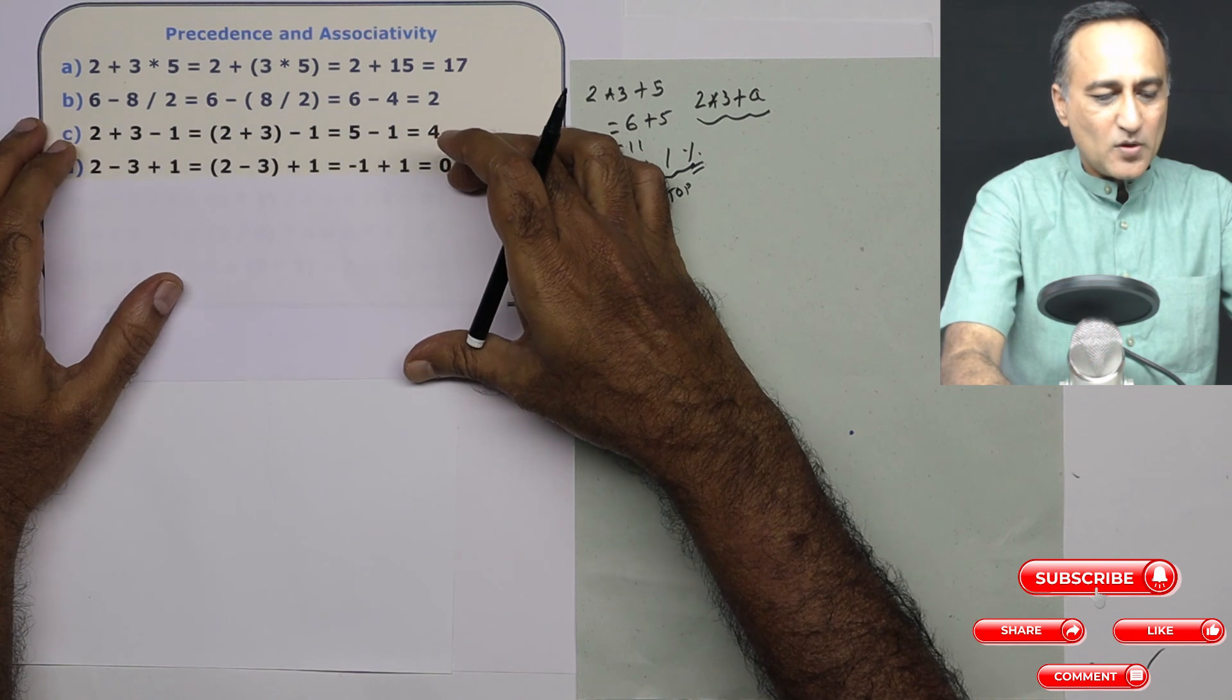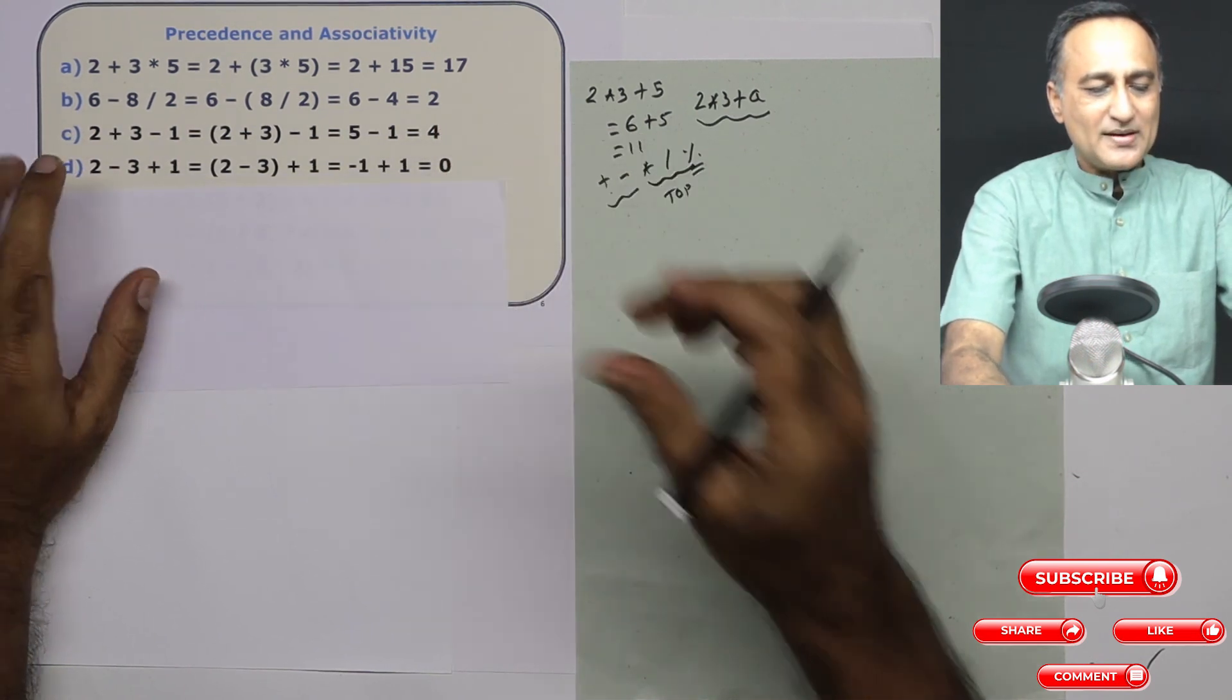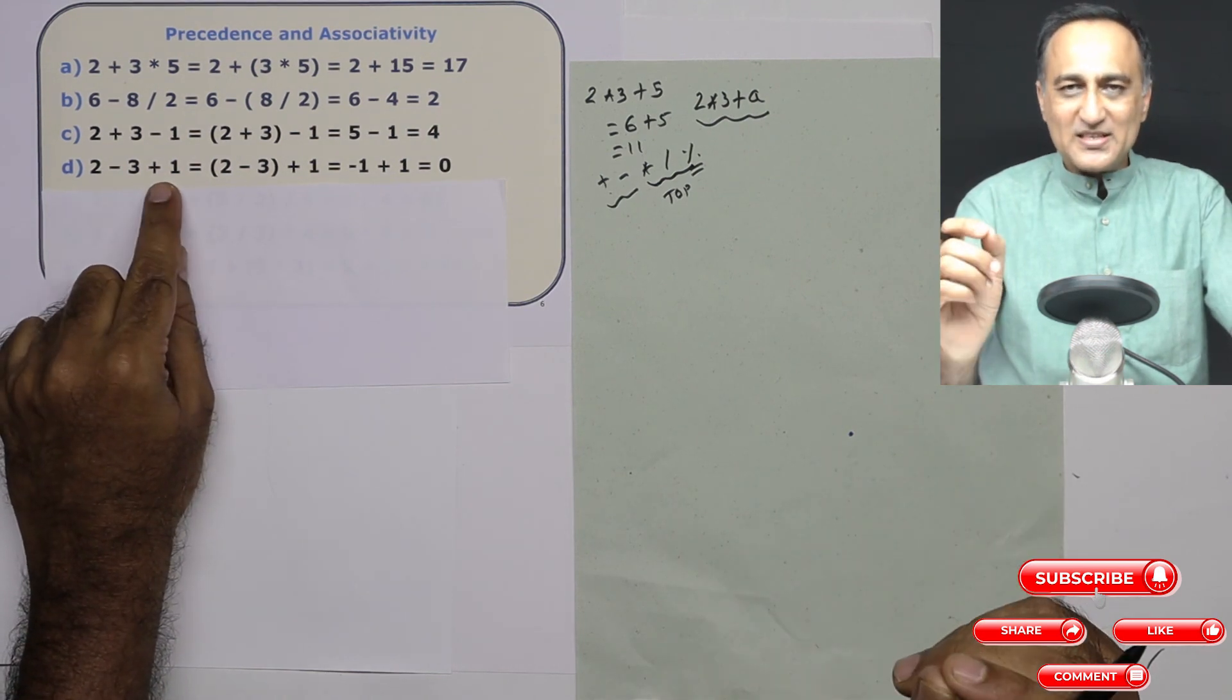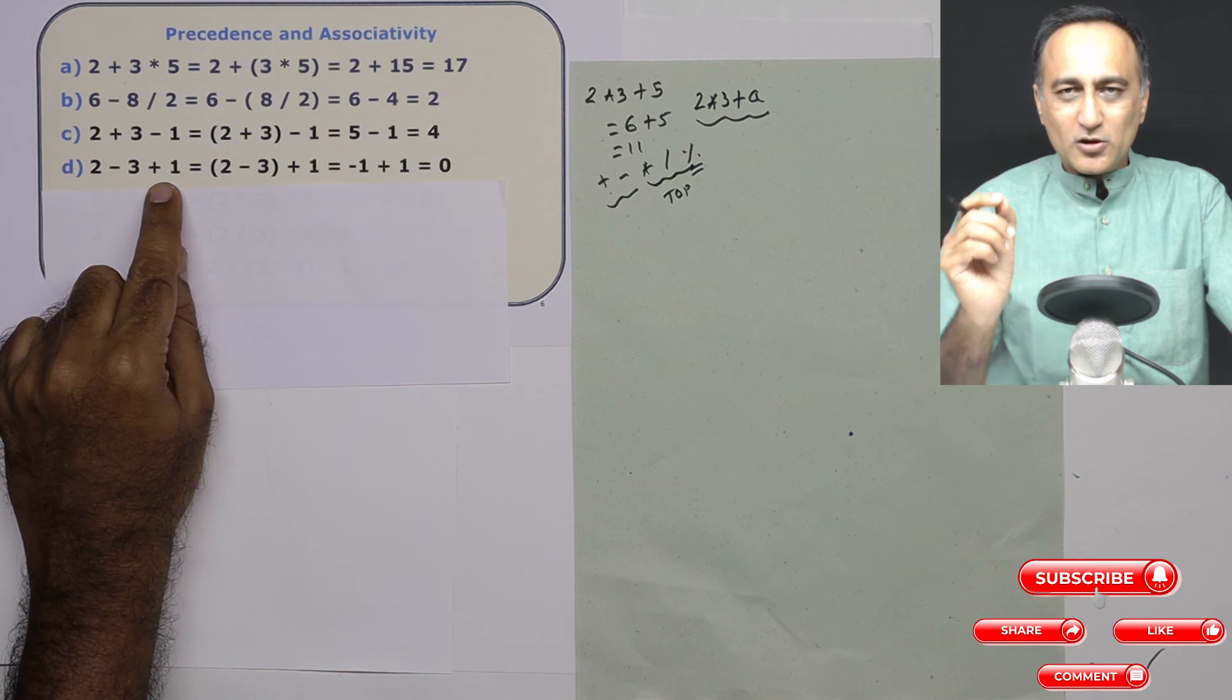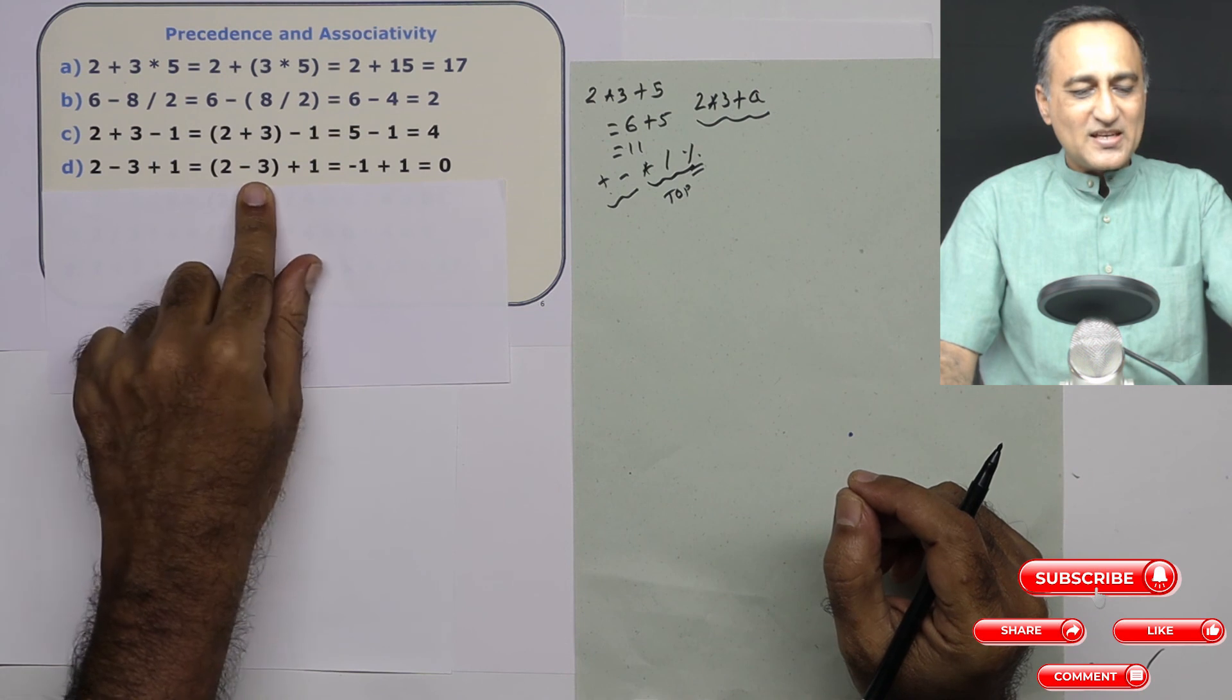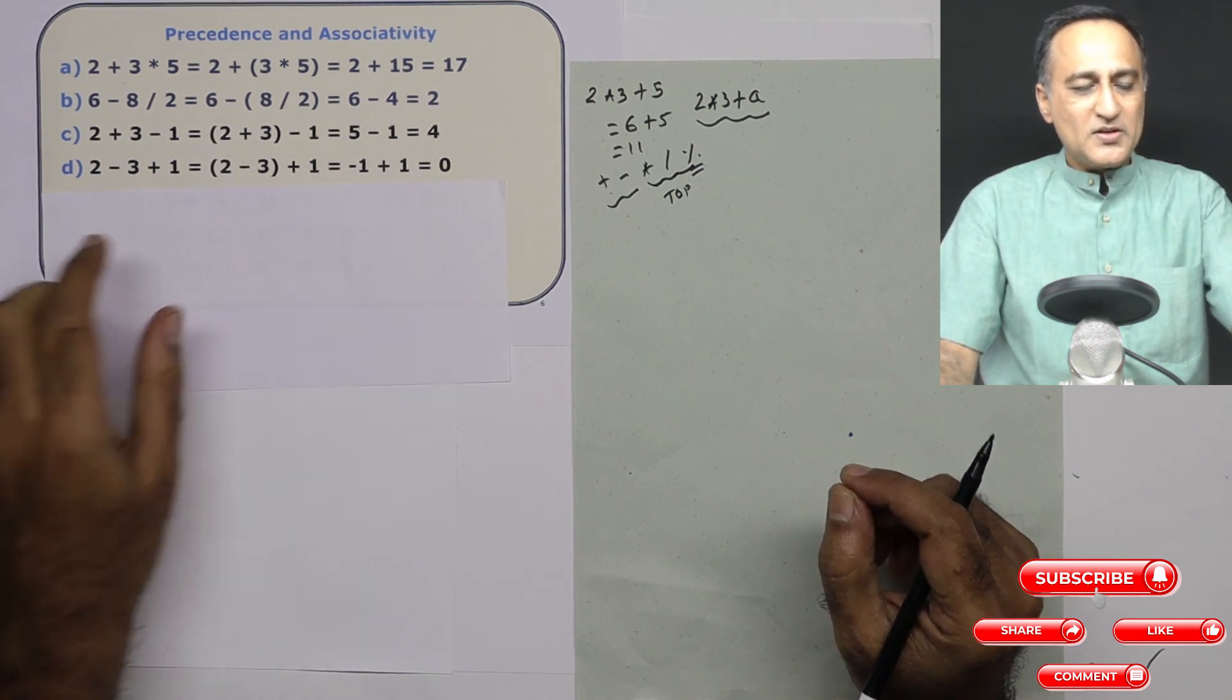Let's take a look at one more example. Suppose I have 2 minus 3 plus 1. Same principle here, two operators with the same precedence, but the rule breaker or the problem solver is go from left to right. So this will become first 2 minus 3 which happens to be minus 1 and then plus 1 which is equal to 0.